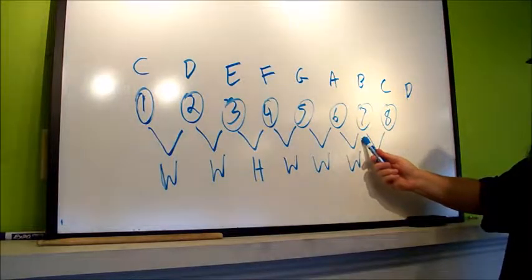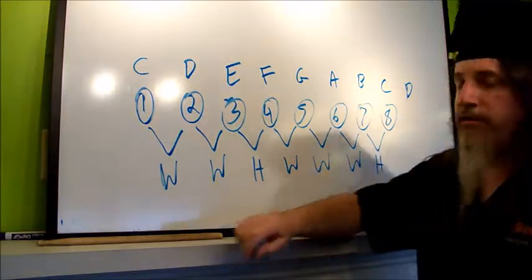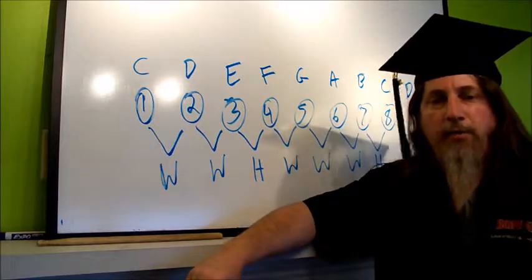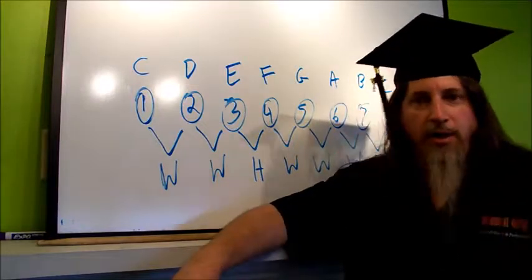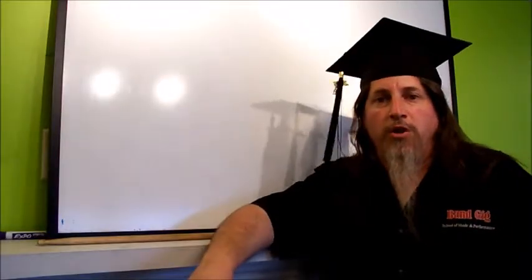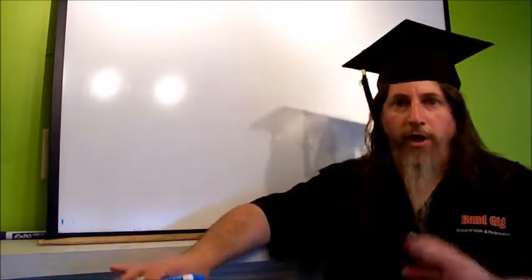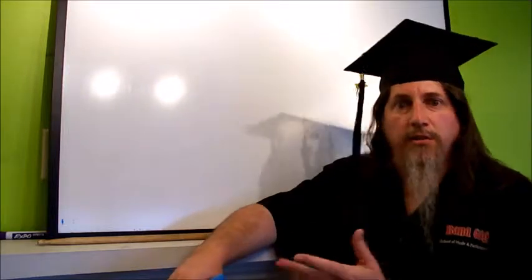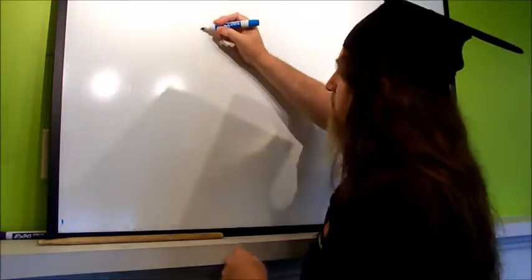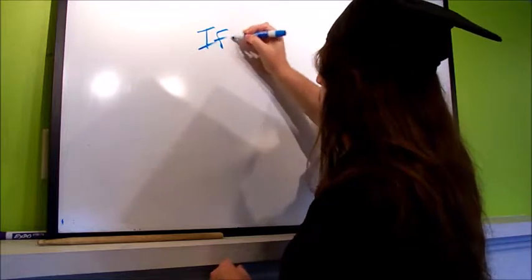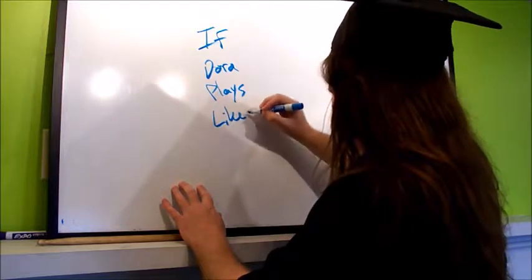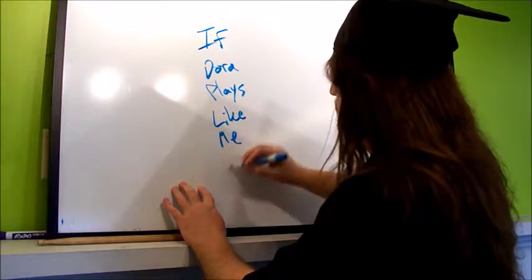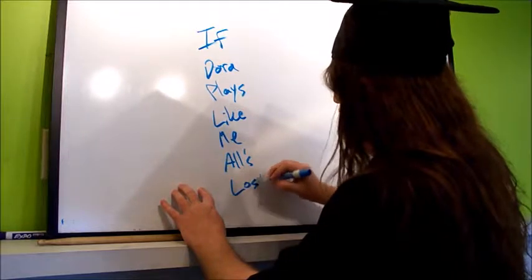There are seven different modes. So what are the names of the modes? Well, they're kind of weird foreign language, you know, for English speaking people, foreign language type names. So I'm going to go over that in a second. So the seven modes are kind of weird sounding type words, names. So I learned it as if Dora plays like me all's lost.